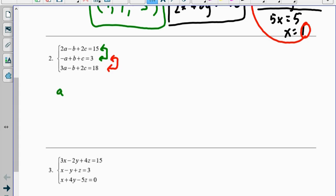2a plus negative a gives me a, the b's go away, and 2c plus c equals 3c, and that equals 18, because 15 plus 3 is 18.